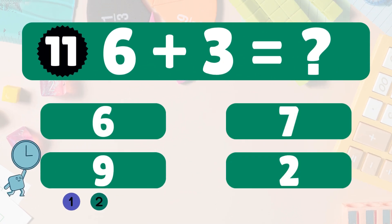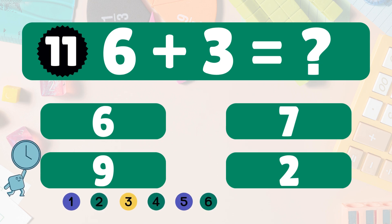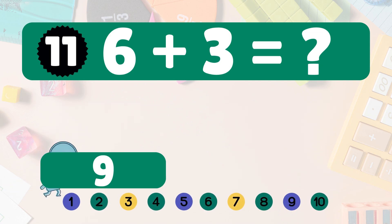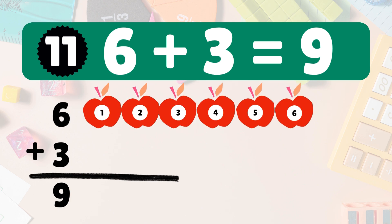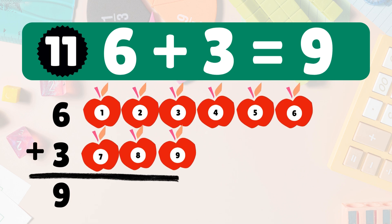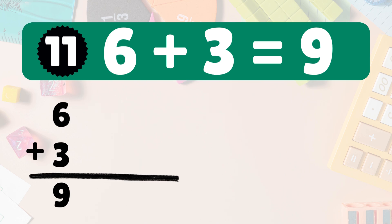6 plus 3 equals what? 6 plus 3 is 9. We start with 6 apples. Add 3 more. Now count them all. 1, 2, 3, 4, 5, 6, 7, 8, 9. So 6 plus 3 is 9.